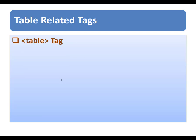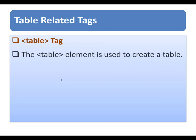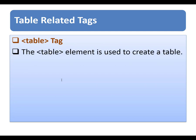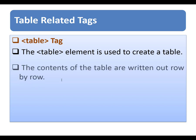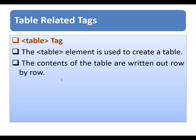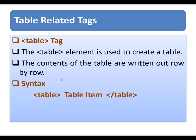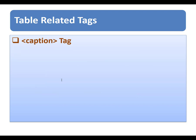The first tag is the table tag. The table tag is used to create the table. The contents of the table are written out row by row. The syntax of the table tag uses an opening and closing table tag, and all other related tags go inside the opening and closing table tag.